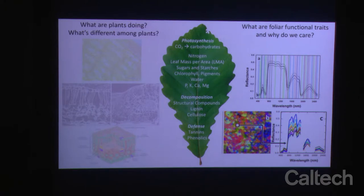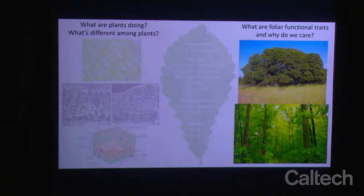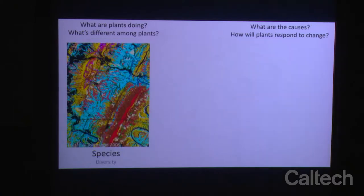If you think about imaging spectroscopy — I'm not going to talk about the details of instruments since there are people here with more expertise — but basically, instead of a measurement of an individual leaf, every pixel is a spectrum, as shown here from this NEON image from Ordway Swisher Reserve in Florida. We get a lot of information, and the idea is to use this information much like we would use leaf-level information to map these traits and understand the variability and function of ecosystems.